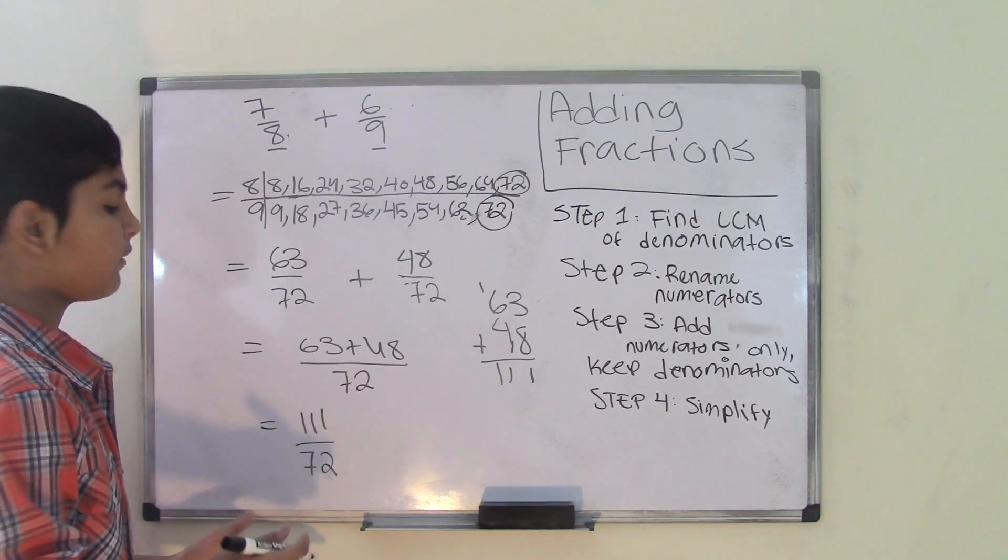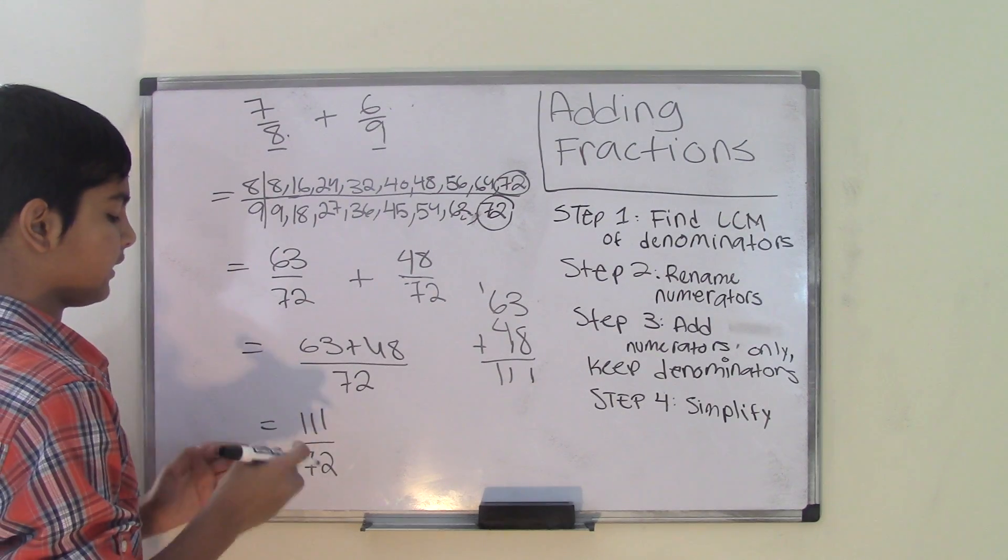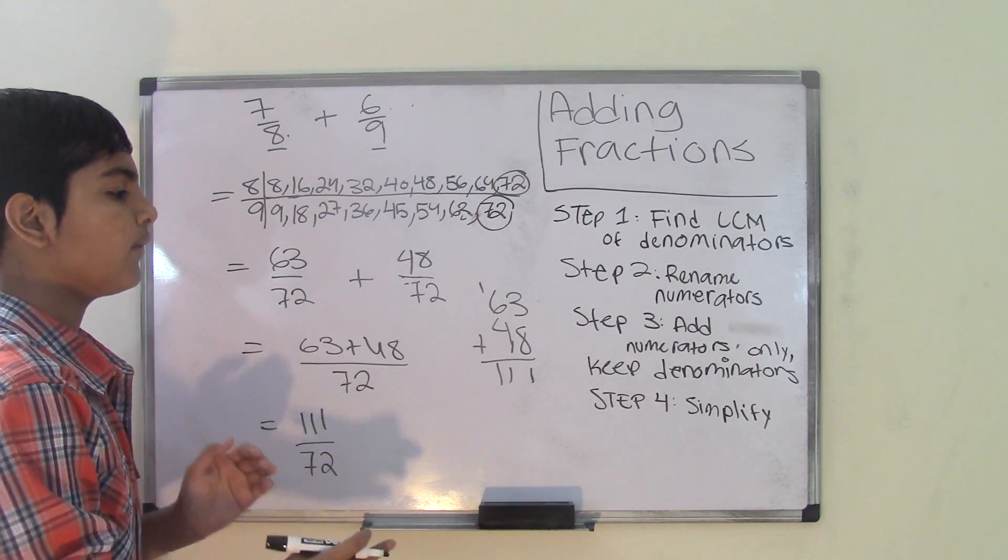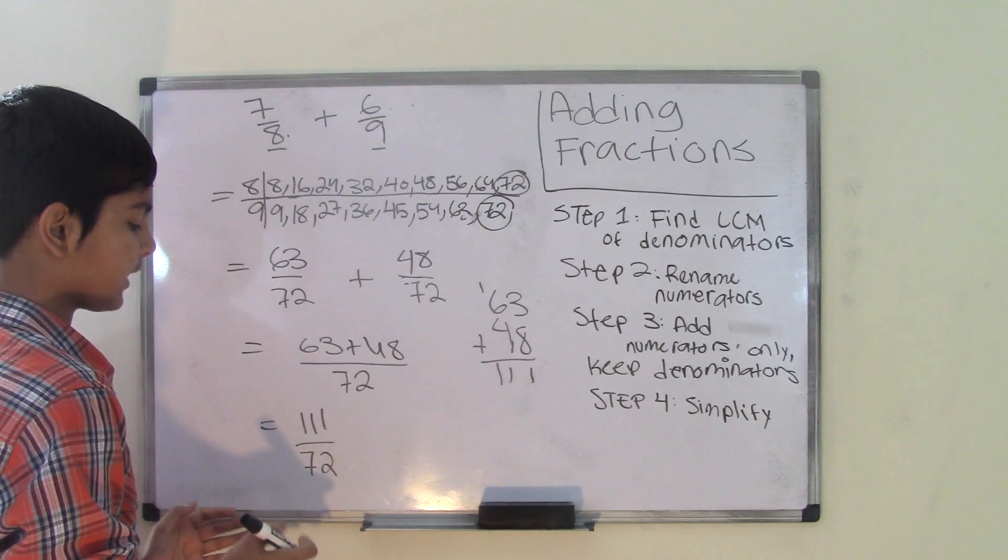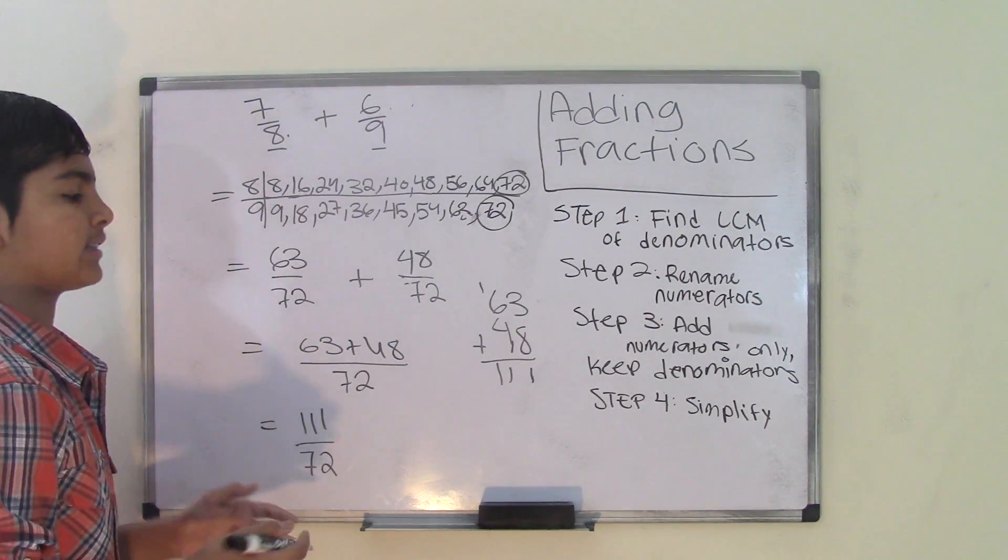We get our final fraction which is 111 over 72. Now step number 4 is to simplify this fraction. Since this is an improper fraction, we need to make it into a mixed number.